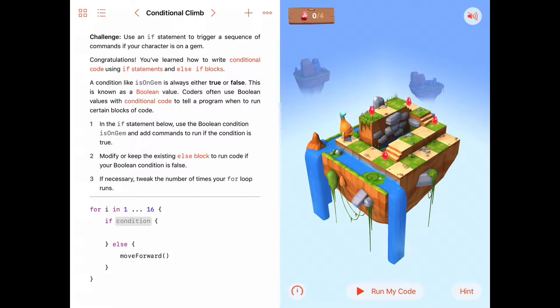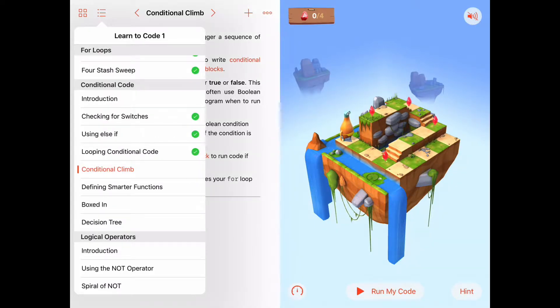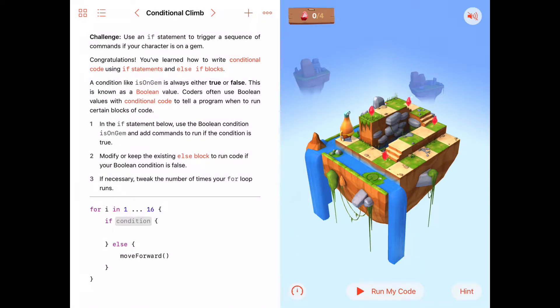Hello, today we are in the Learn to Code chapter Conditional Code, and we're working on the fourth activity called Conditional Climb. This is one of my favorite activities so far. It's a pretty neat activity, plus there's lots of interesting things we're going to be learning here, so it's an important activity as well.